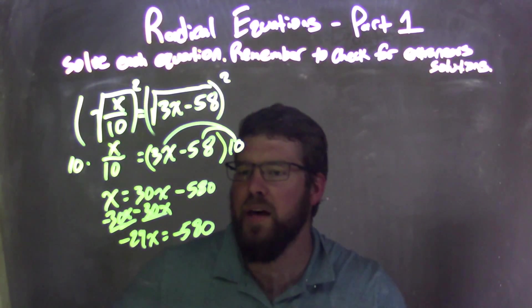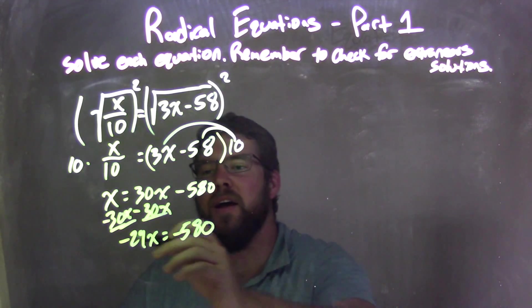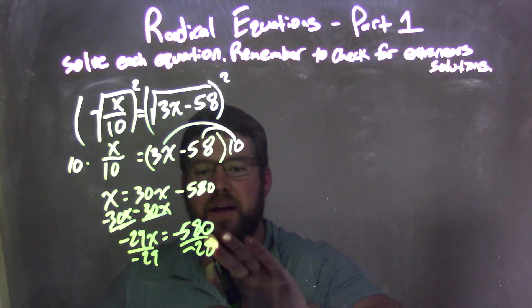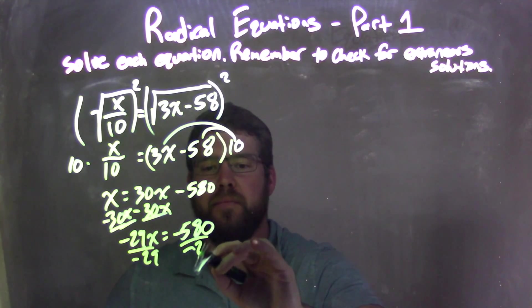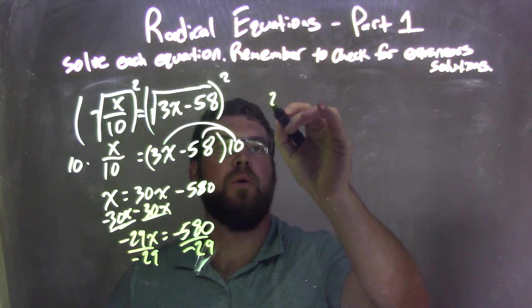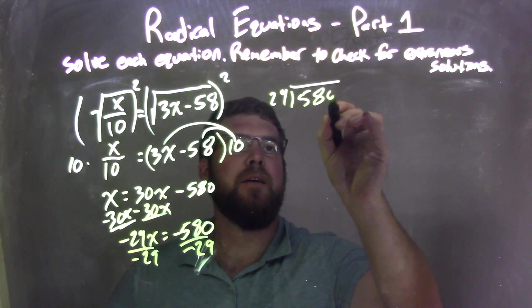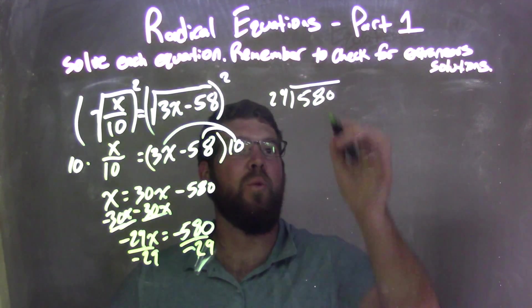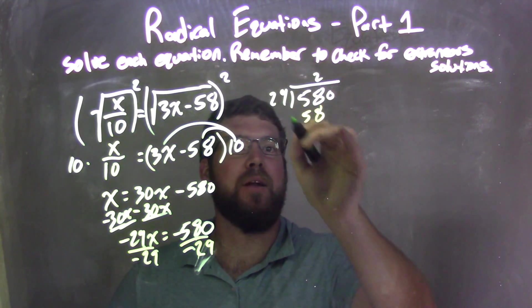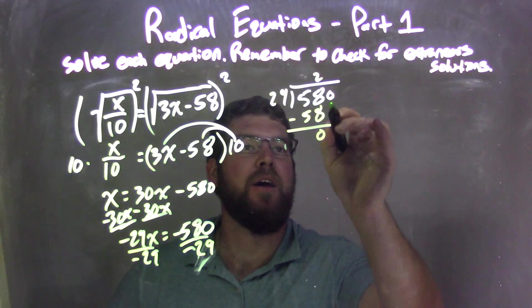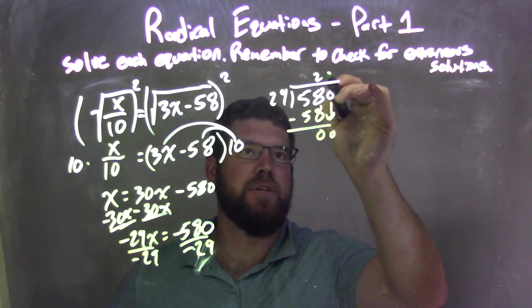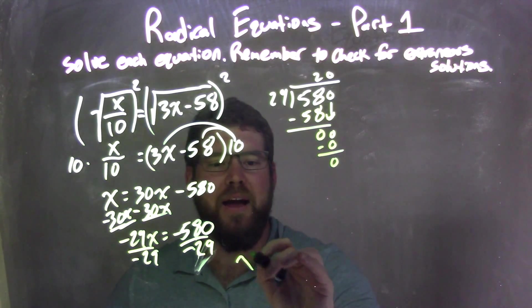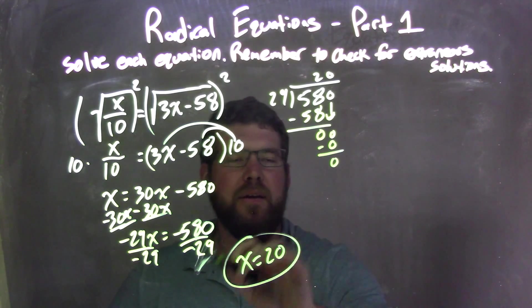Now we want to see how many times 29 goes into 580. I divide both sides by negative 29. Using long division: 29 goes into 58 twice — 2 times 29 is 58, subtract to get 0, bring down the 0. 29 goes into 0 zero times. So x equals positive 20 is my solution.